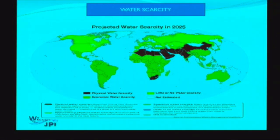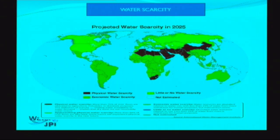There is also economic water scarcity — shown in yellow — where water resources are abundant but there are problems of management, and water doesn't reach the inhabitants. As a consequence, we are in a world of unsustainable growth: 7 million people in 43 countries suffer today from water scarcity.